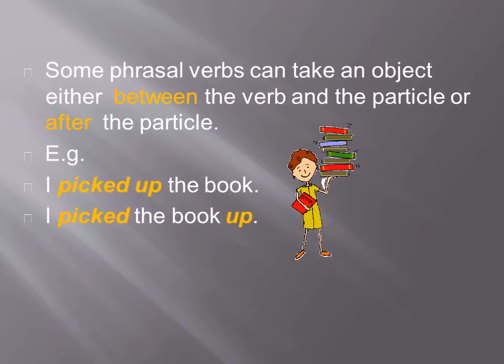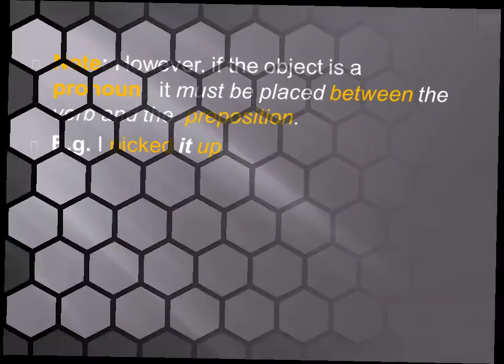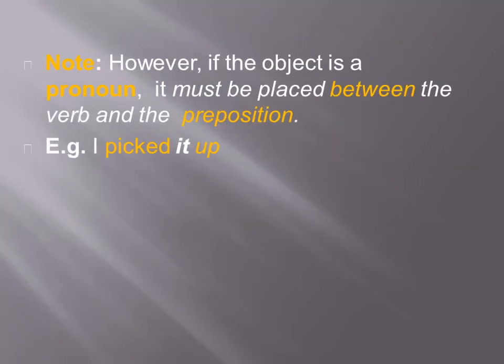Some phrasal verbs can take an object either between the verb and the particle or after the particle. For example: I picked up the book, or I picked the book up. Note, however, if the object is a pronoun, it must be placed between the verb and the preposition. For example: I picked it up.